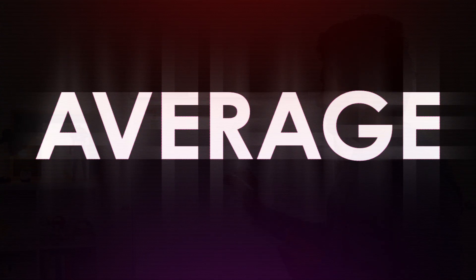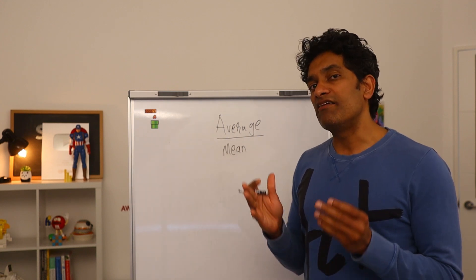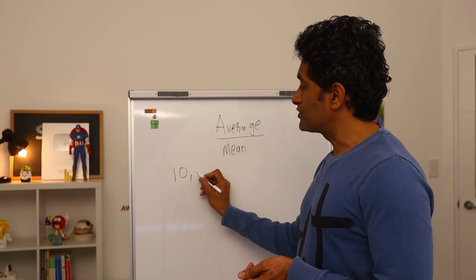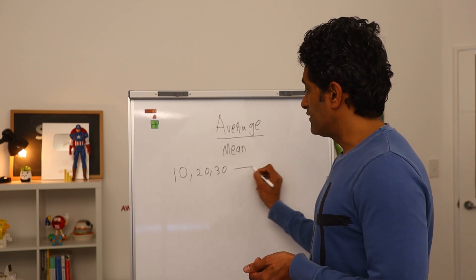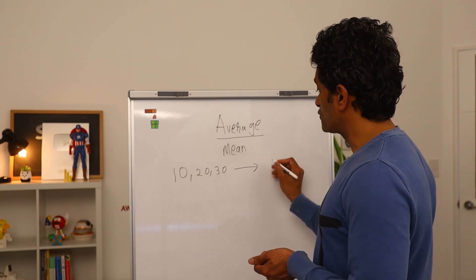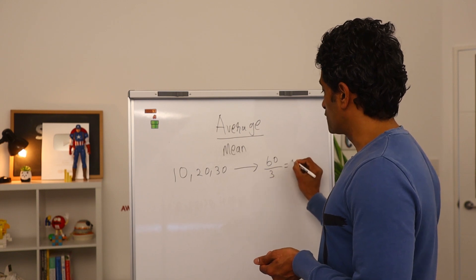Let's start with average or mean. Average is nothing but sum of values divided by count of values. So imagine you have three values 10, 20 and 30. The average of this group would be all the numbers together, that is 60 divided by 3, so 20.